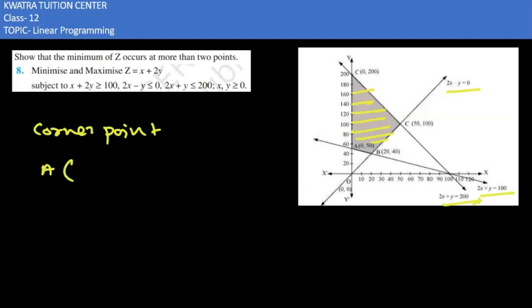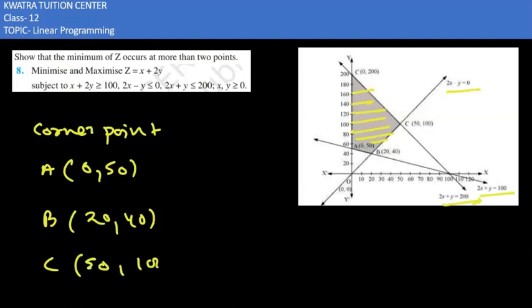Corner point coordinates are: A is (0,50), B is (20,40), C is (50,100), and D is (0,200).